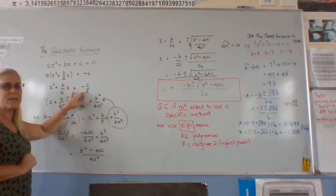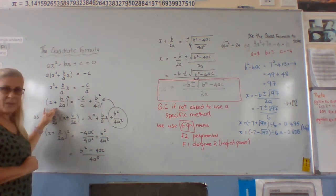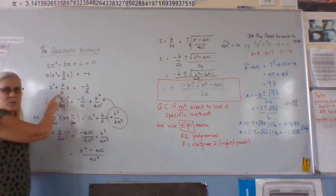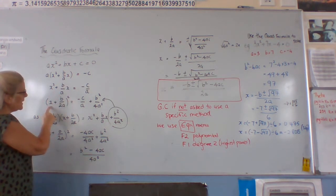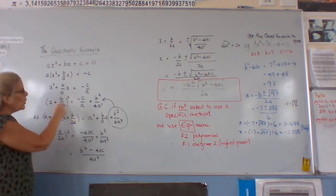We're trying to get to just one x, and to do that we complete the square. So we take half of the middle term, which is this one with the x. So we've got x plus b over a, and half of it means 2a all squared.